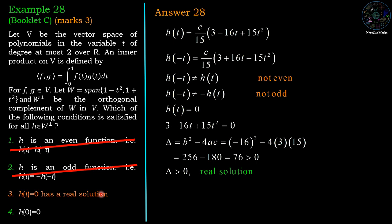And the last option: h(0), so if we put t equal to 0, then 16t term will be 0, 15t squared term will be 0. Then we have 3c by 15, and c is not 0 for all the polynomials. Therefore h(0) equal to 0 is not always, and hence the fourth option is also wrong.